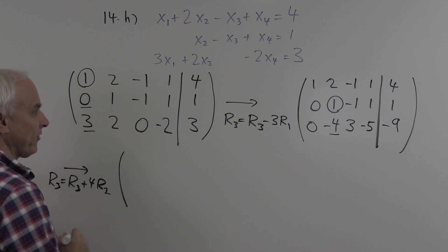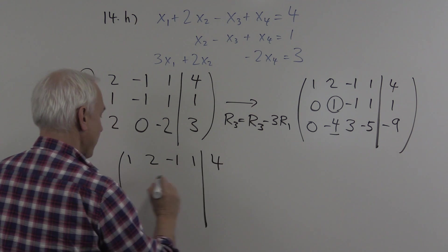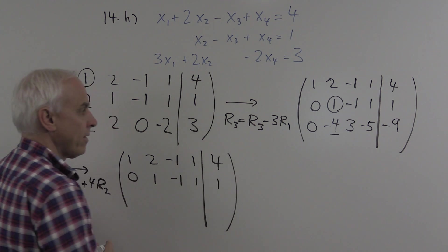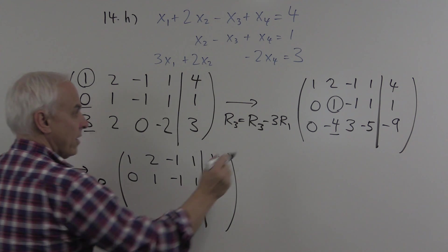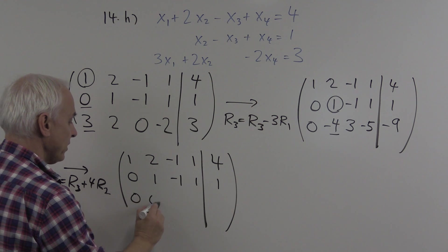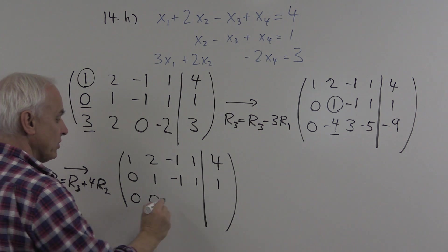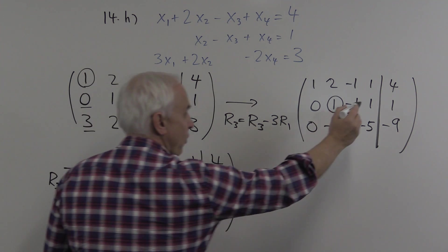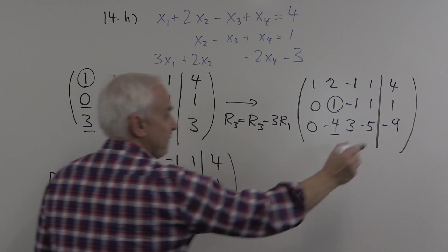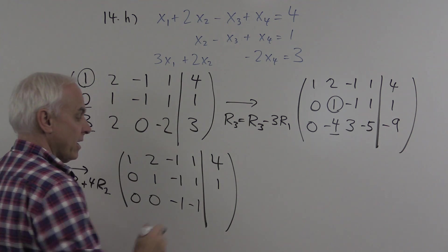First row stays where it is, and the second row stays where it is. We're adding 4 times this row to the third row, giving us 0, 0. 4 times minus 1 plus 3 is minus 1. 4 times 1 plus minus 5 is minus 1. 4 times 1 plus minus 9 is minus 5.